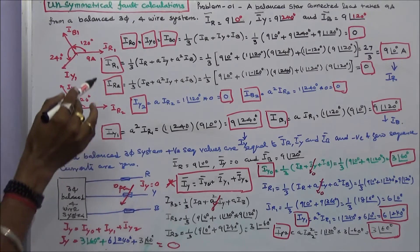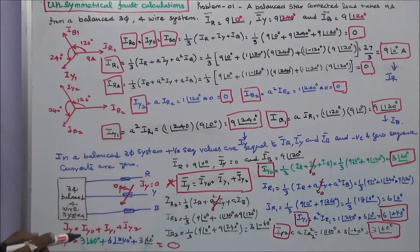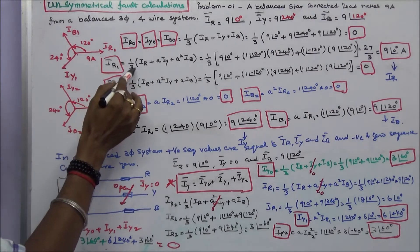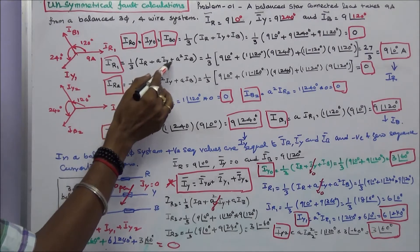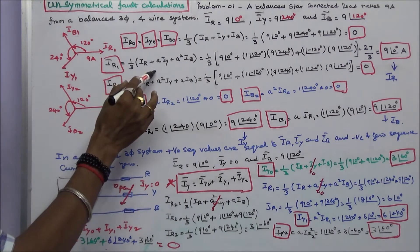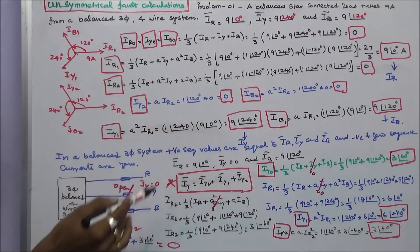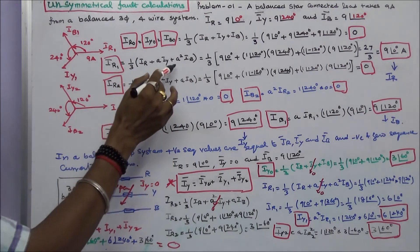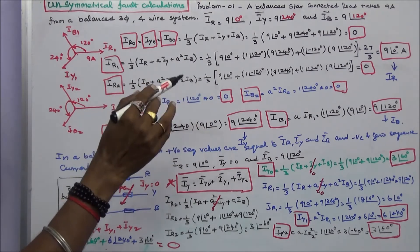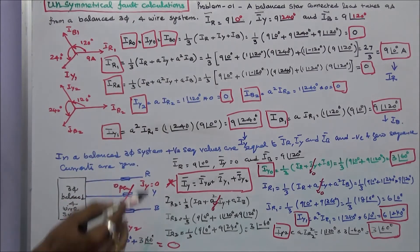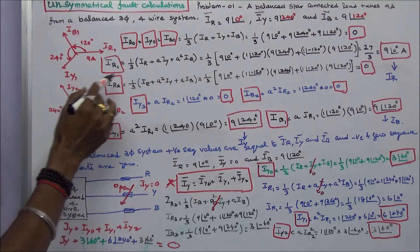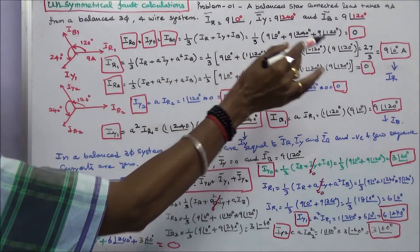Next, we will calculate the positive sequence current IR1. IR1 is equal to 1/3 into (IR plus A·IY plus A²·IB). Here A is equal to 1 angle 120 degrees, and A² is equal to 1 angle 240 degrees, or equivalently 1 angle minus 120 degrees. Substituting all the values in this equation, IR1 is equal to 9 angle 0 degrees.